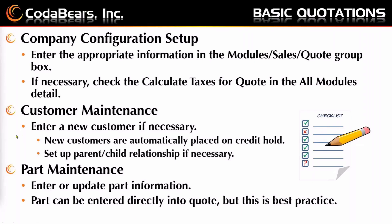After we get our company set up, we go to customer maintenance and enter a new customer if necessary. On the quote level, you may not have a customer already in the system, so this is where you would go to customer maintenance and take care of that. Remember that new customers are automatically placed on credit hold. You can also choose between whether they're a prospect or an actual customer. If necessary, you might want to set up a parent-child relationship — for example, if you're quoting company X which is a child of company Y — used for parent-child billing.